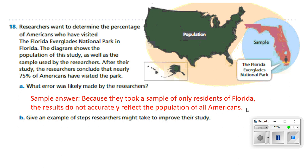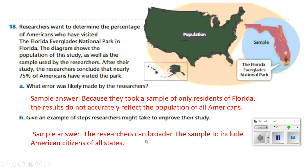This would be like going to a football game in Chicago and asking everyone coming out of the stadium who their favorite football team is — that wouldn't give an accurate reflection of all Americans, because most of them would say the Chicago Bears. If you wanted an accurate sample, you'd have to take a poll from an equal number of people from every state. So the researchers can improve the study by broadening the sample to include American citizens of all states.